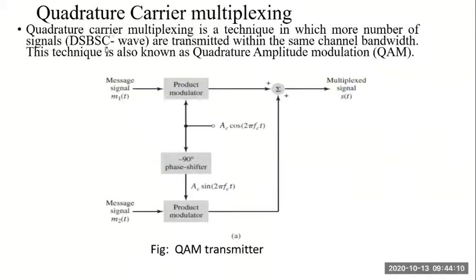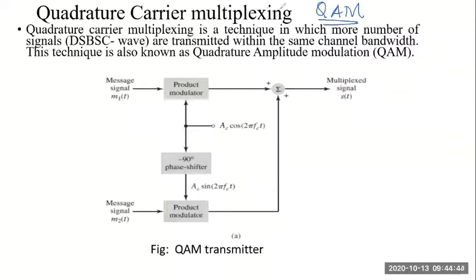The next topic is Quadrature Carrier Multiplexing, also known as Quadrature Amplitude Modulation or QAM. You would have seen this - even today, many mobile signals are Quadrature Amplitude Modulated signals. Whether we use the name Quadrature Carrier Multiplexing or Quadrature Amplitude Modulation, both are one and the same.